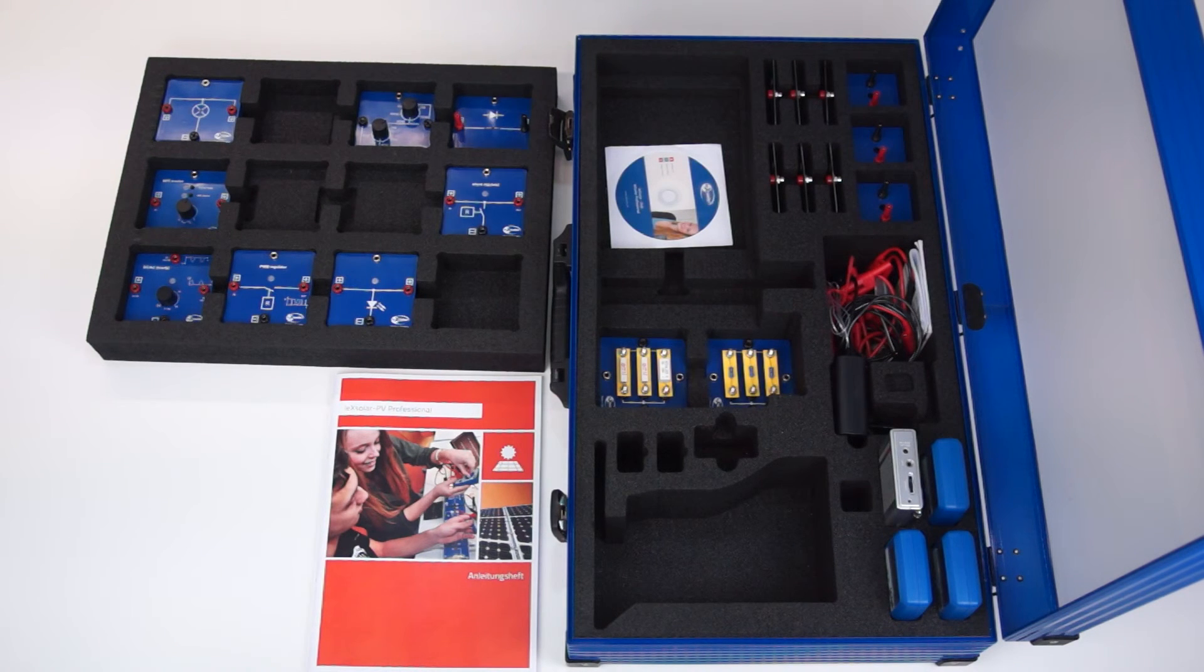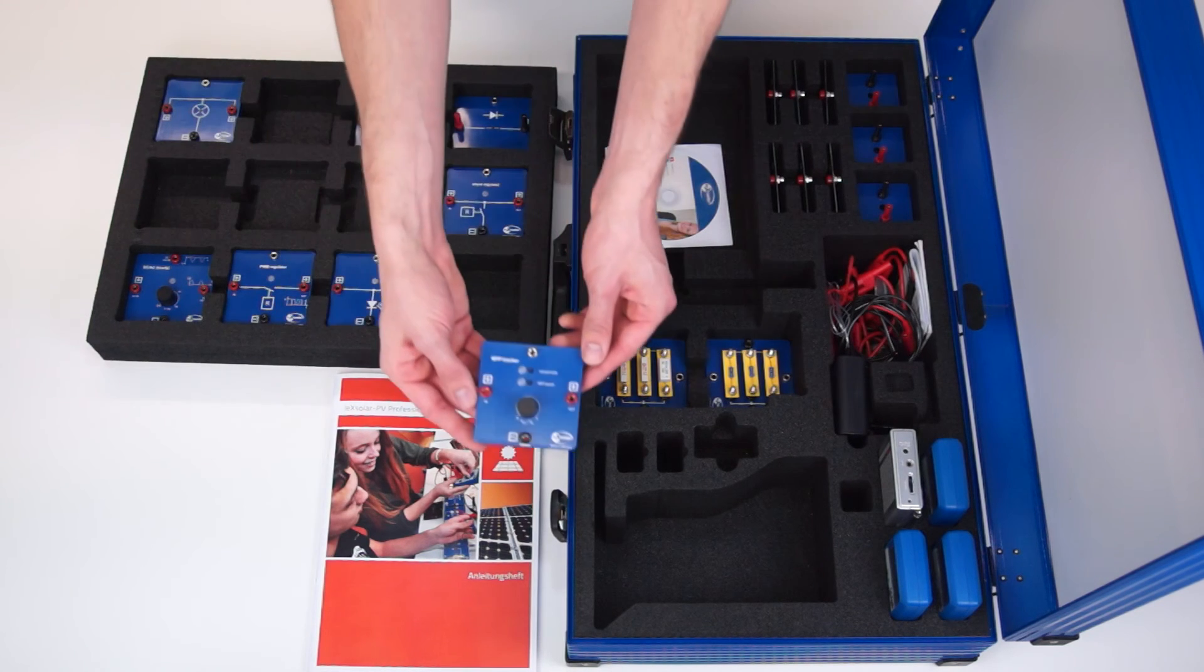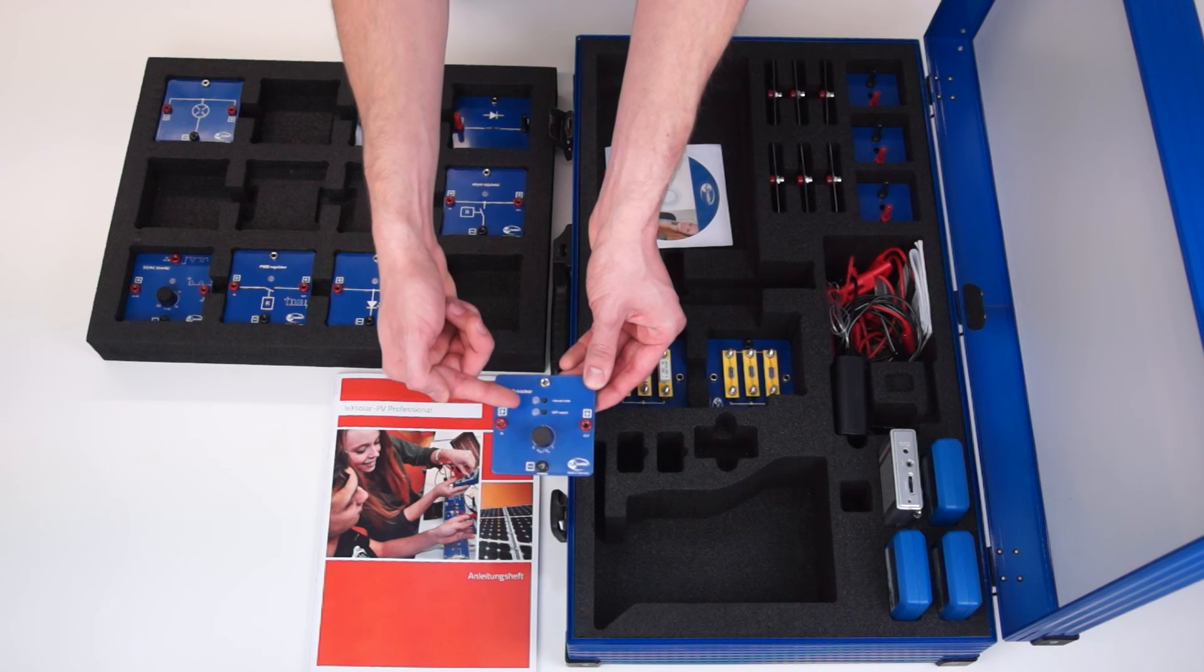Furthermore, there is an MPP tracker that maximizes the performance of the solar module. It can be either manually controlled or run in automatic function.